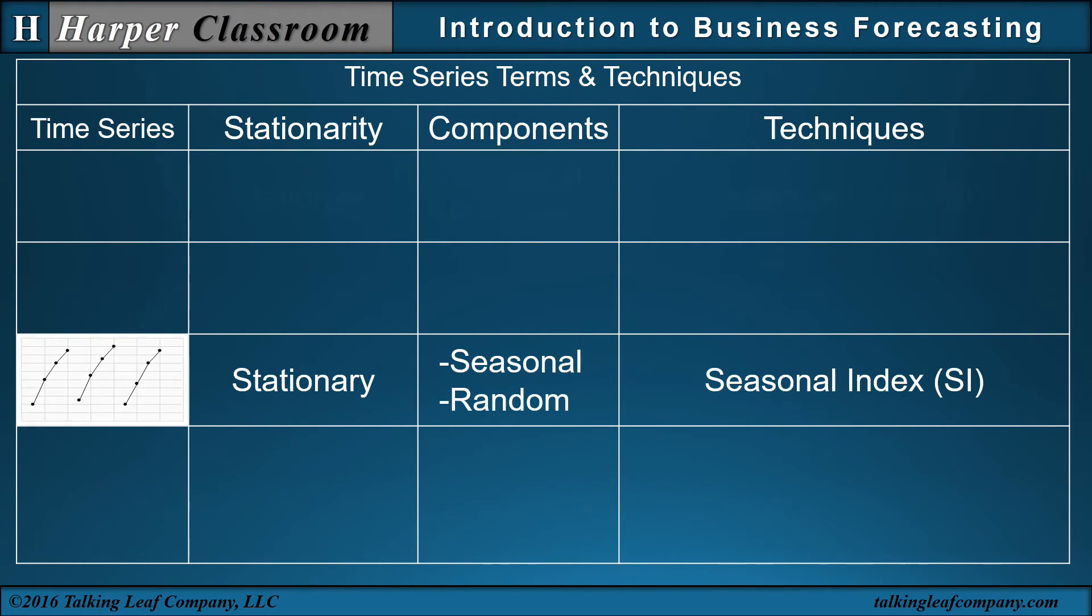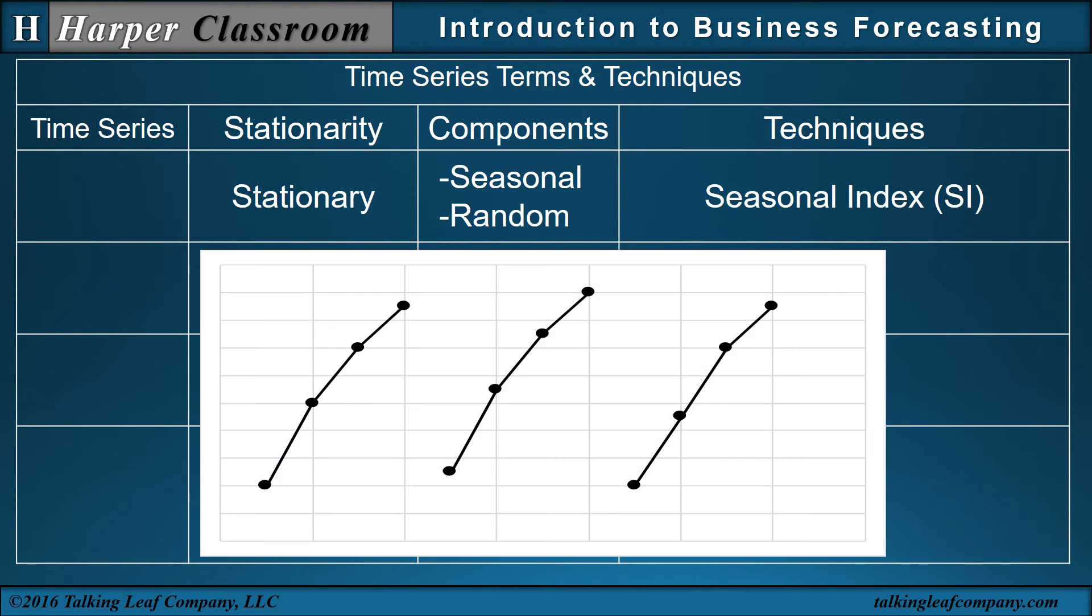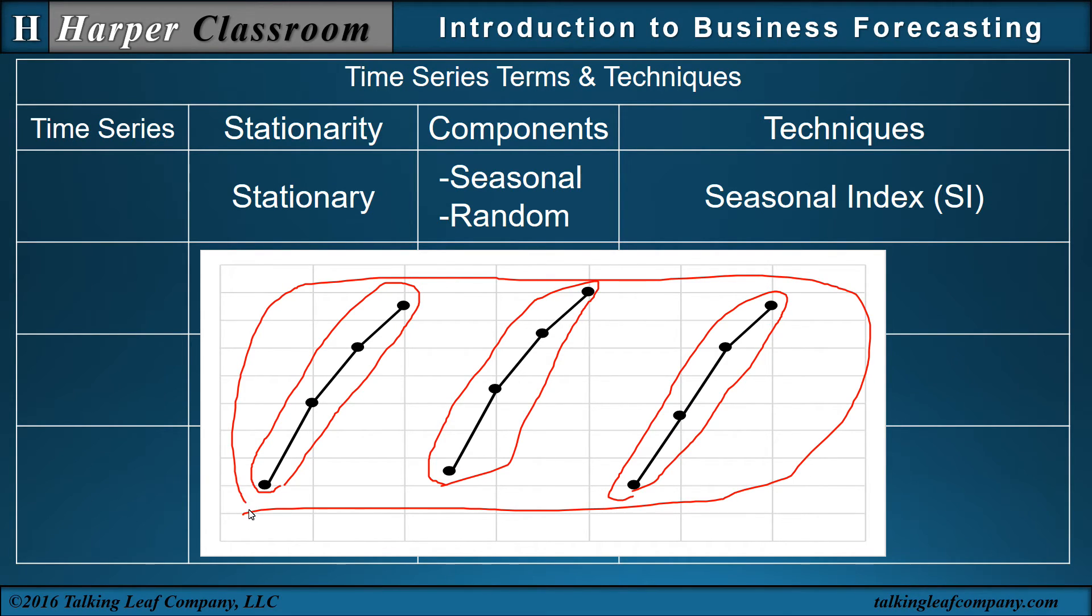Let's look at the third time series. When we plot the third time series, let's assume that this is quarterly data. So every data point represents one quarter. Well, this right here then represents one year. But that's a pattern, and that pattern repeats the second year. And the same pattern repeats the third year. Well, the overall nature of the time series is constant, so it is a stationary time series.